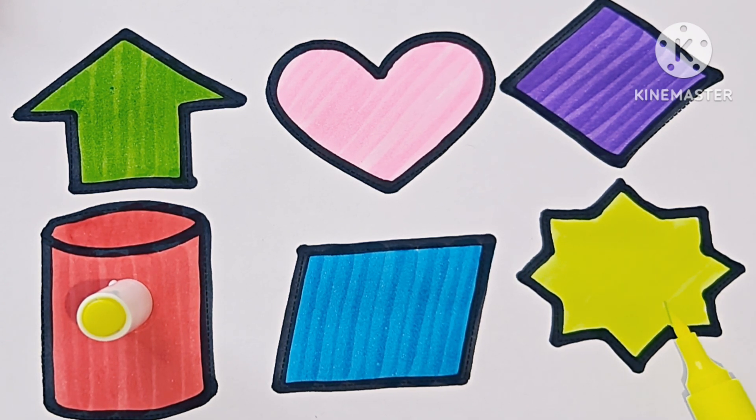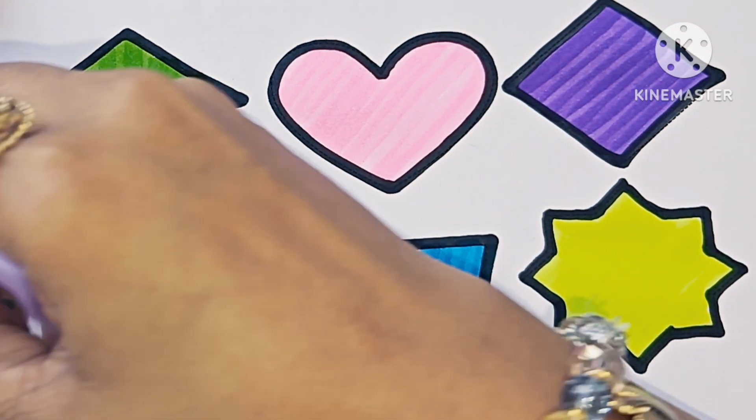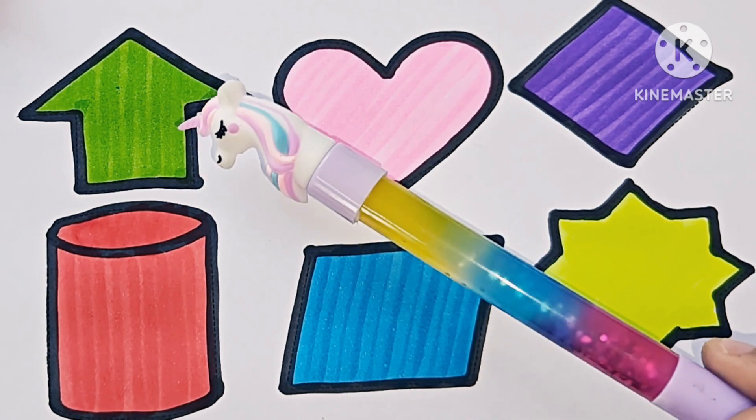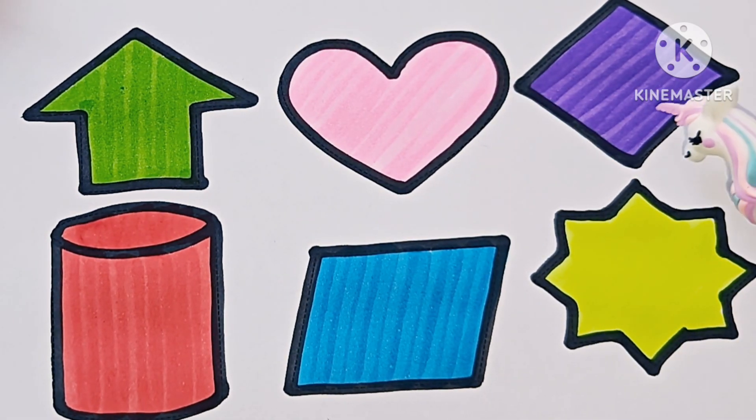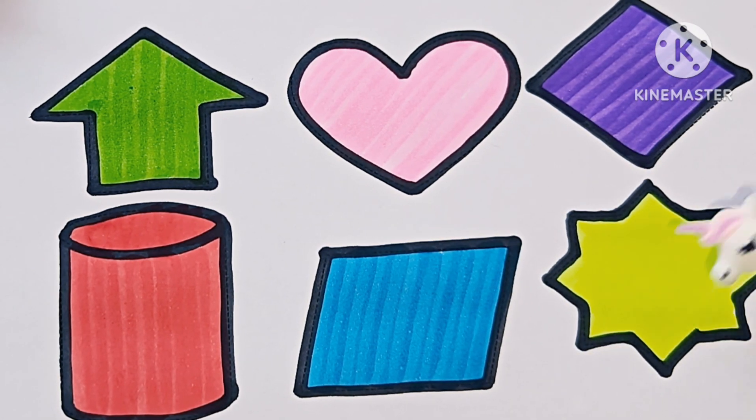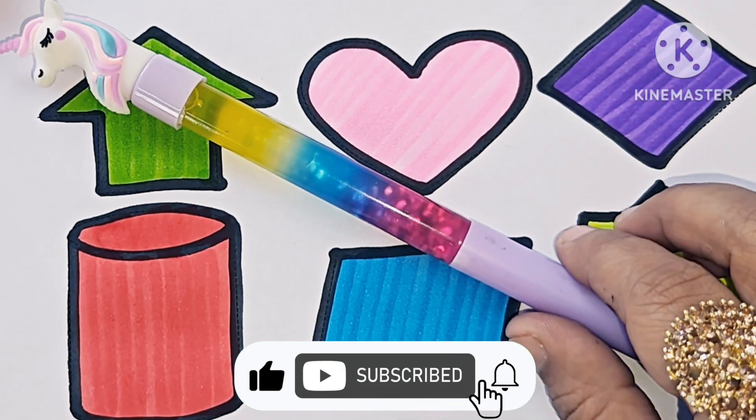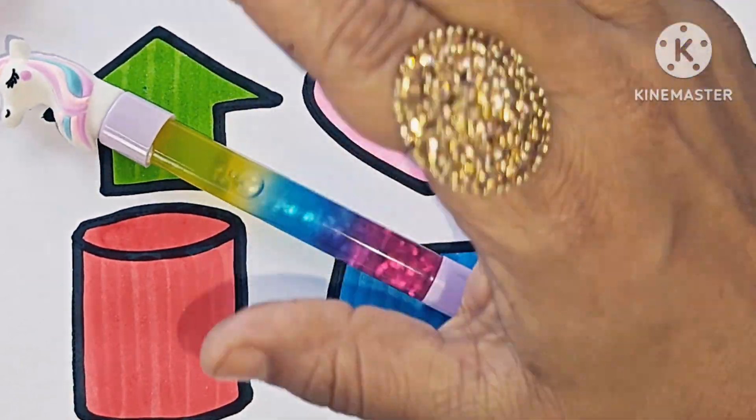8 pointed star. This is up arrow, heart, rhombus, cylinder, parallelogram, 8 pointed star. Thanks for watching this video. Don't forget to like and subscribe. See you in the next video. Bye bye.